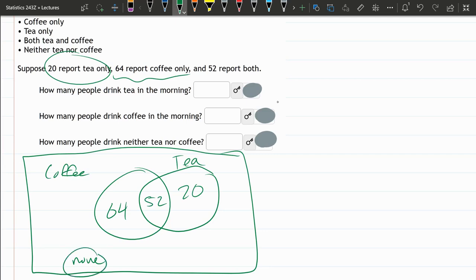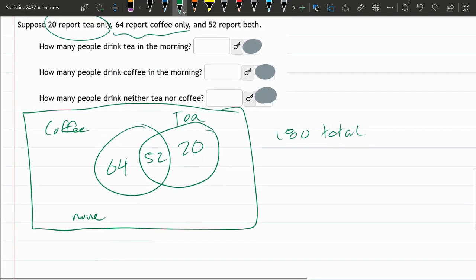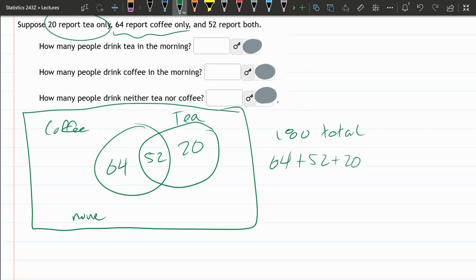And so for none, how would we get none? We need to know the total, 180 total. And how many do we already have here? 64 plus 52 plus 20.